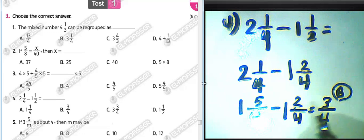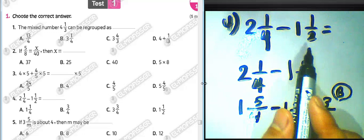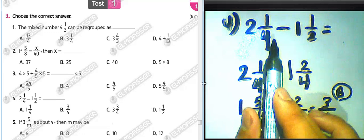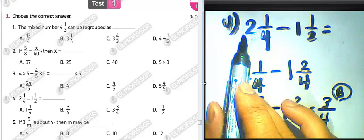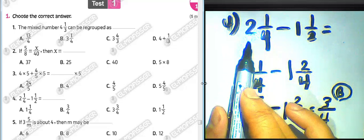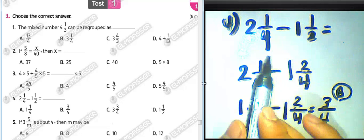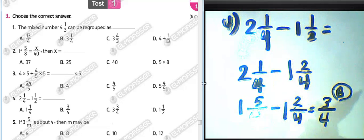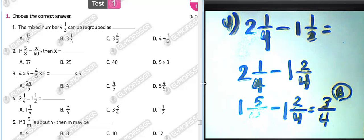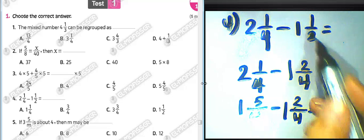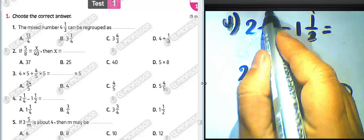We can also solve this another way. We know two and one quarter subtract one and one half. You can find the difference in one step: the answer is three over four.